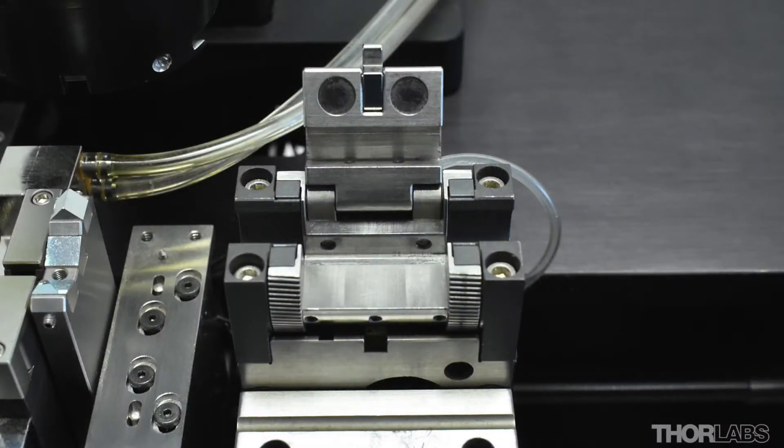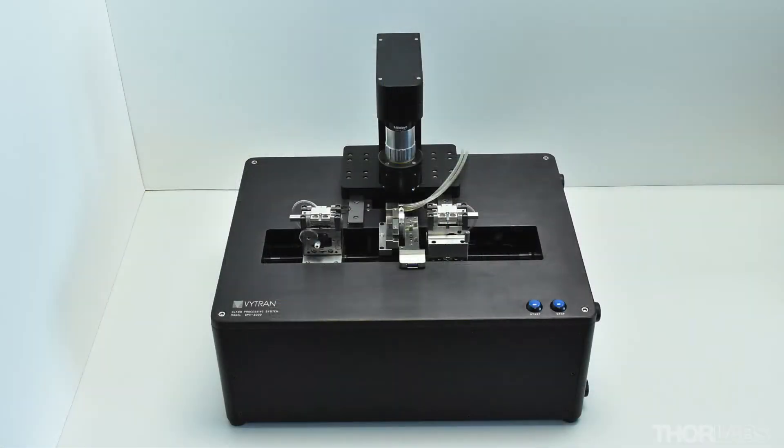Inserts are fitted into the other fiber holding block on the unit in the same way. The inserts will then be fully installed and the unit is ready to use.